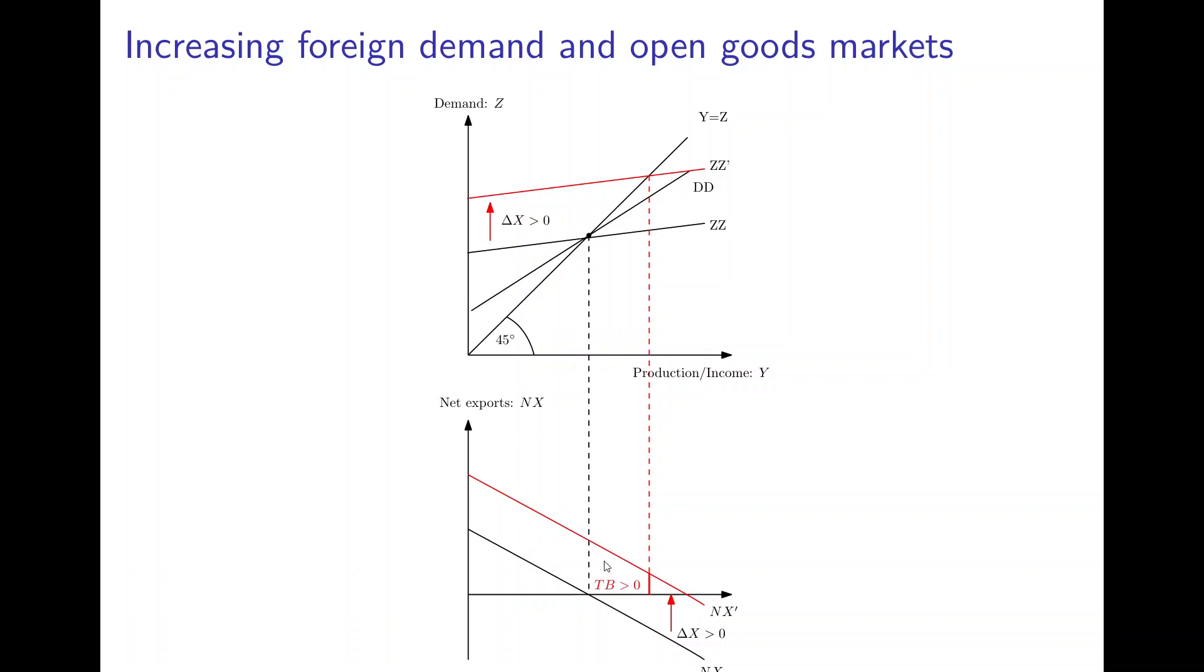Now since there is a shift in exports but no shift in imports because the exchange rate didn't change and domestic income didn't change, we have the net exports shift upwards from NX to NX prime, and this shift being due to the change in exports.